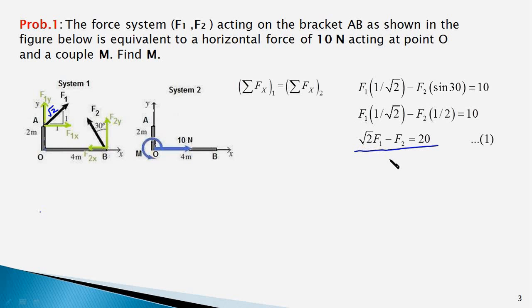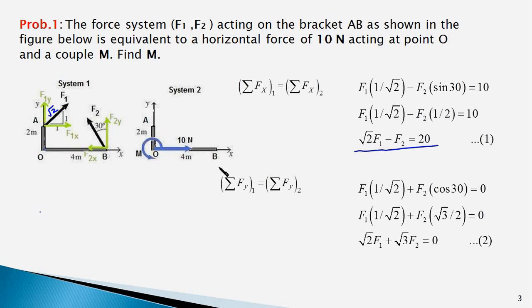And now we will be applying the second scalar equation that is sum of y component of the forces in system 1 is equal to sum of y component of the forces in system 2. So F1y is F1 times 1 upon root 2 and it is in positive y direction. F2y is F2 cos 30. It would be plus because it is pointing in plus y direction. So equation is F1 times 1 upon root 2 plus F2 cos 30 equal to 0 because there is no force in the y direction in system 2. We plug in the value of cos 30 in the second equation and then multiply the entire equation by 2 to simplify to this equation: root 2 F1 plus root 3 F2 equal to 0.